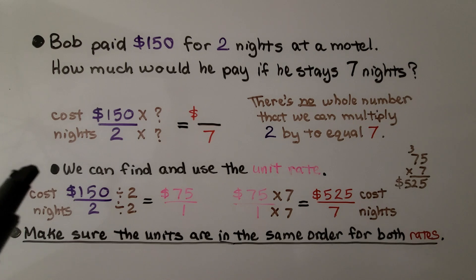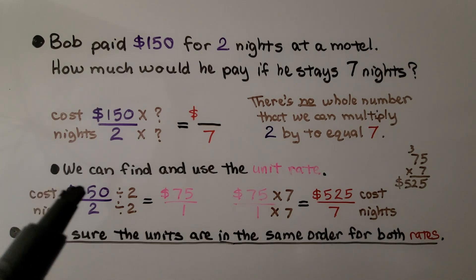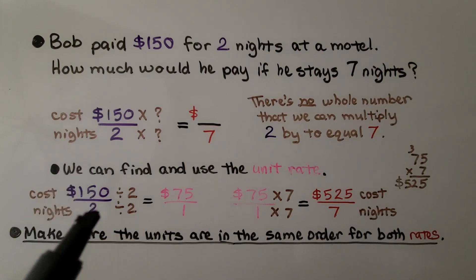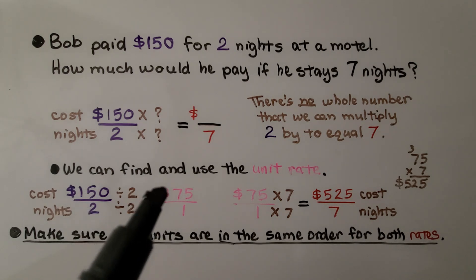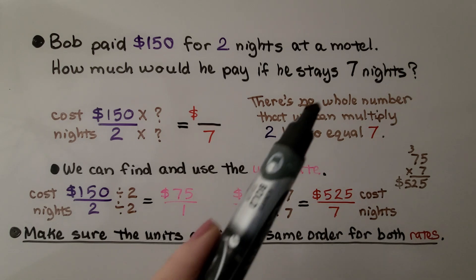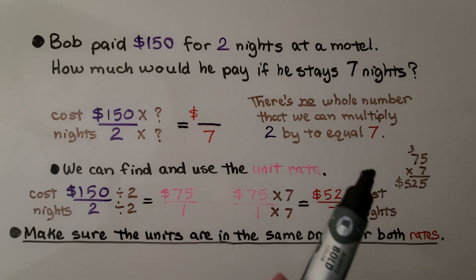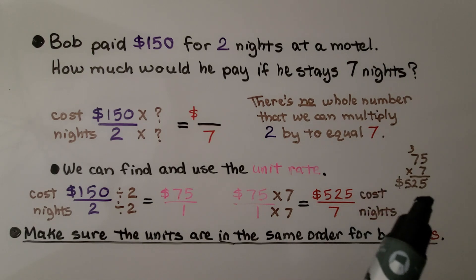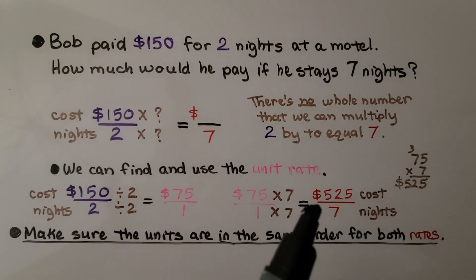We can find and use the unit rate. We do the cost, $150 divided by the 2 nights, and we get 75, or we could divide each term by 2 because that's our denominator, and we get a unit rate of $75 for 1 night. Now, if we're trying to find 7 nights, we just multiply 75 times 7. We get $525. We know that our equivalent rate would be $525 for 7 nights.